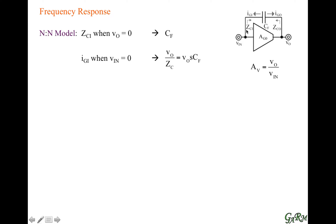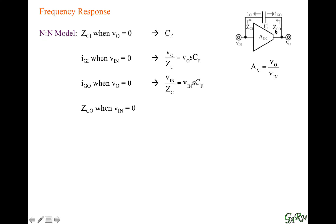Then we have the voltage-to-current translation to the output when the output is grounded. The voltage into the capacitance when the output is grounded gives an ohmic translation from the input voltage, so the input voltage divided by that impedance produces the translation V_in·SC. Lastly, the impedance into the capacitor from the output when the input is grounded is nothing but the capacitor impedance, which the capacitor alone can model.